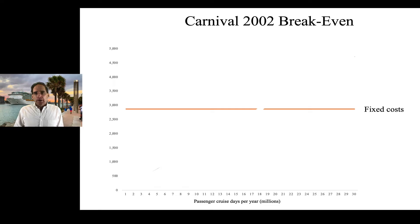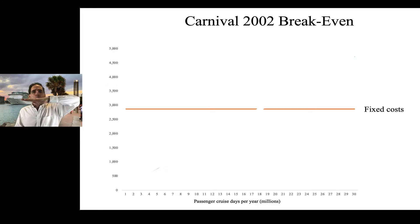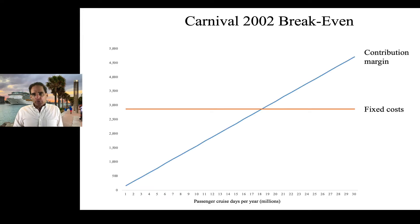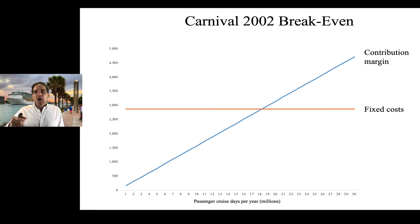So first of all, what is a break-even analysis? We're going to illustrate this with data from Carnival 2002 from the Carnival case. Basically, what a break-even analysis is doing is first asking: what are our fixed costs — the costs that we bear regardless of how many passengers we carry? Then we say, having established that, what is our contribution margin? The contribution margin is how much incremental cash we're generating per additional passenger — essentially the price you're charging, the revenue per additional passenger, minus the variable costs associated with that passenger — the costs incurred if and only if a new passenger comes on board.